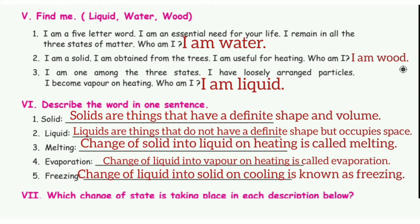3. I am one among the three states. I have loosely arranged particles. I become vapor on heating. The answer is: I am liquid. Describe the word in one sentence. 1. Solid — Solids are things that have a definite shape and volume.